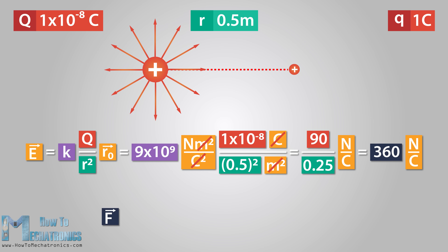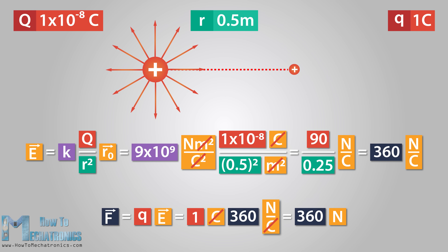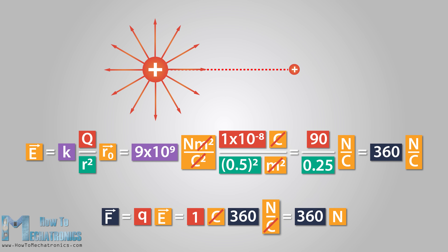The force exerted on the test charge is equal to the test charge multiplied by the magnitude of the electric field, which is 1 coulomb multiplied by 360 newtons per coulomb. Since both the point charge and the test charge are positive, the force will be repulsive, meaning the direction of the force will be outwards.